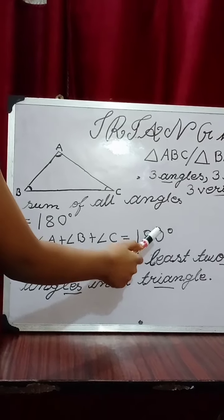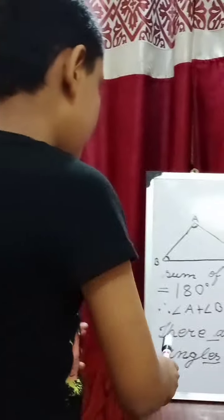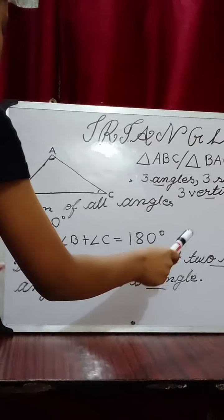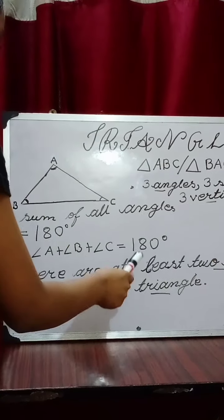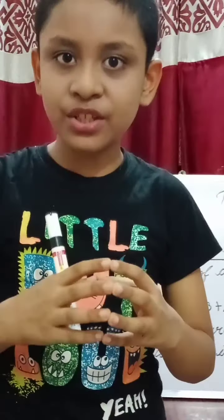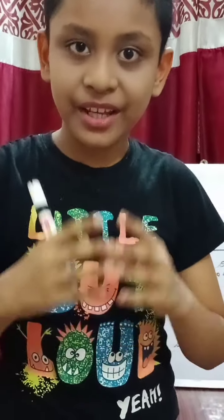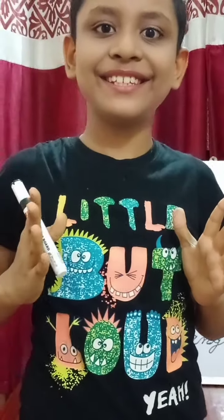Another fact is that there are at least two acute angles in a triangle. An acute angle is an angle which is less than 90 degrees. Now let's move on to the types of triangles.